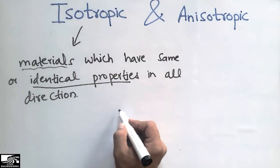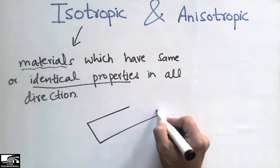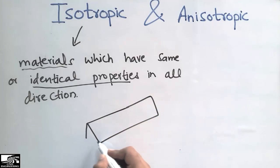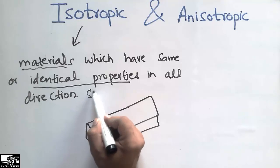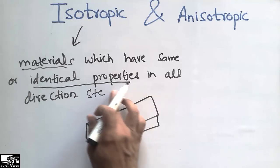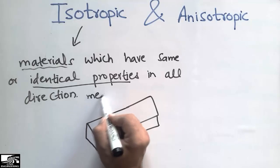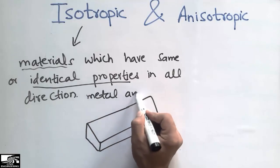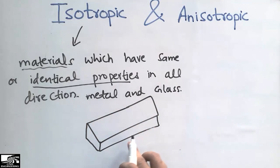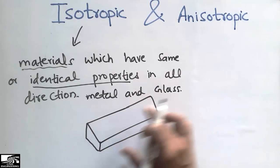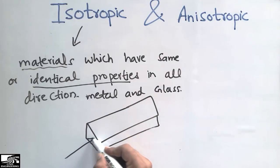For example, consider any isotropic material. Isotropic materials include steel, metals, and glass. If I consider a glass or metal object, they have the same properties in all directions. For example, if a load is applied in the x direction, and we also have the y direction and z direction.